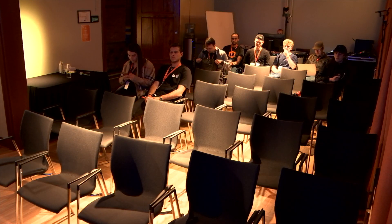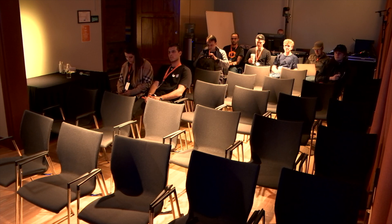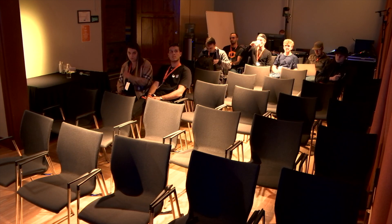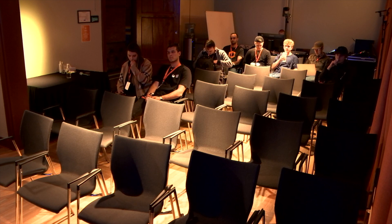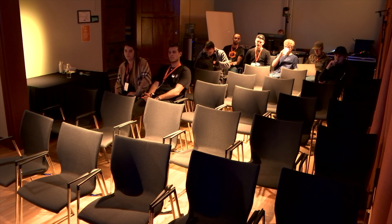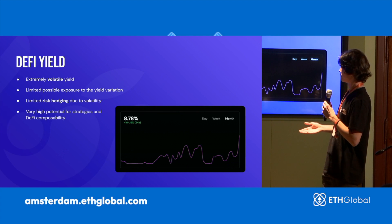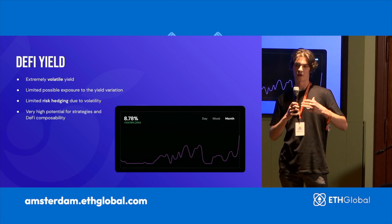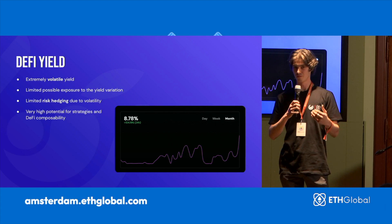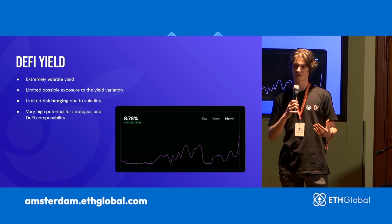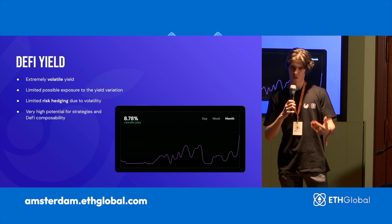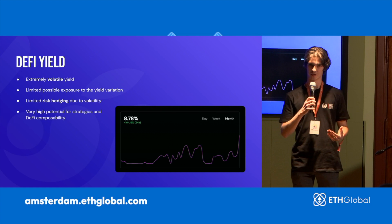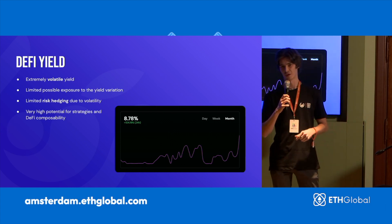If you were here during the DeFi summer of 2020, you may have noticed that there was extremely volatile yield, which is still the case today. You're seeing insane three-digit APYs that are simply not sustainable. So this was the kind of issue that we noticed, and we said there's no means right now to hedge your risk on this APY volatility. So how do we enable this?